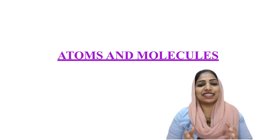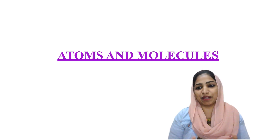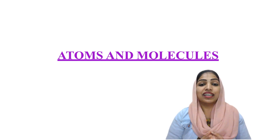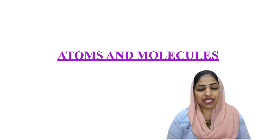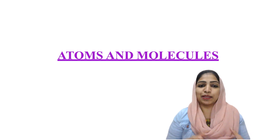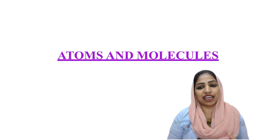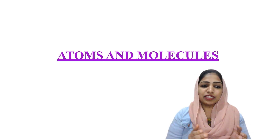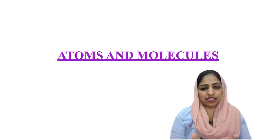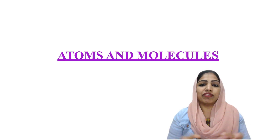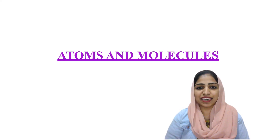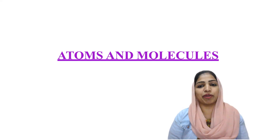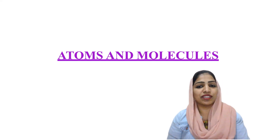There are physical properties such as color, appearance, and rigidity. There are also chemical reactions. Now, we have two metals: copper and aluminum, and two chemical reactions associated with them.